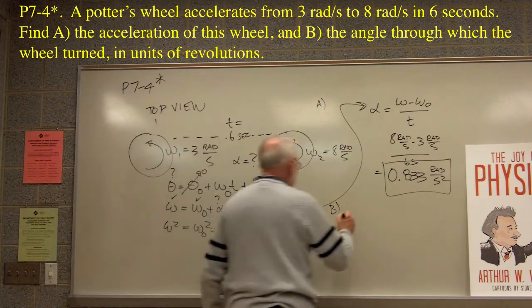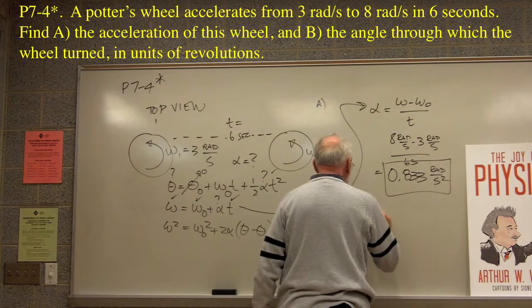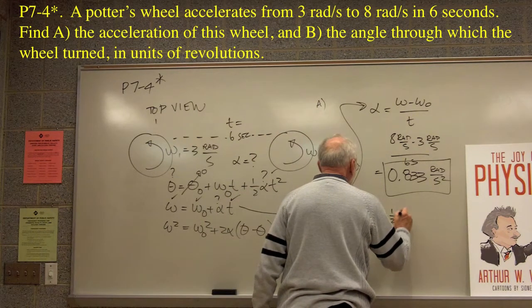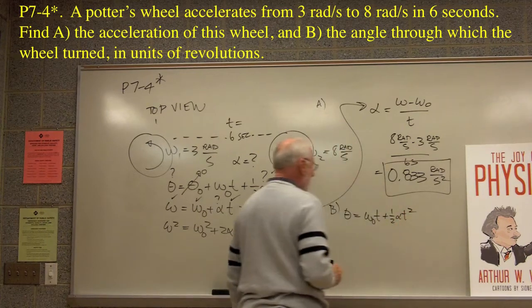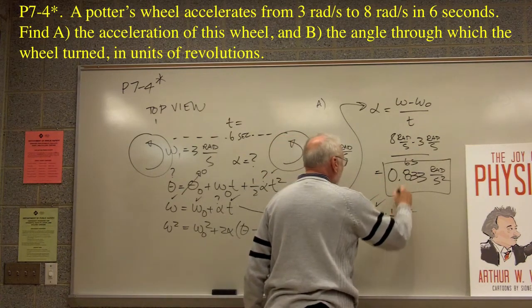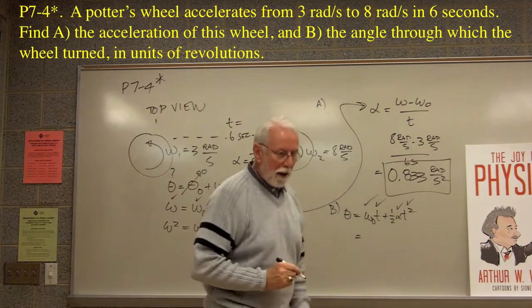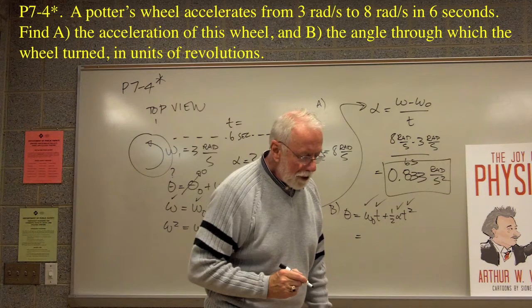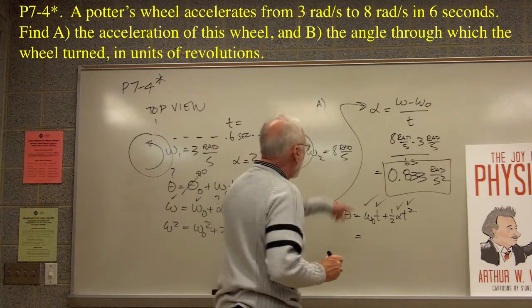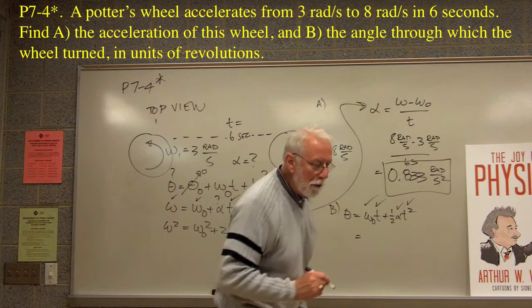So then theta equals omega-0t plus one-half alpha t squared. So, okay, we know omega-0, we know t, we know alpha. We just found it. And we know t squared. So then this is purely a case of putting in these numbers. And it turns out that when you put in the radians and so forth, you wind up with 33 radians.